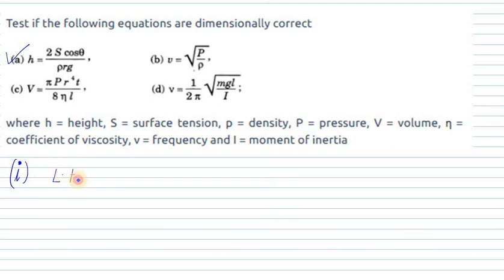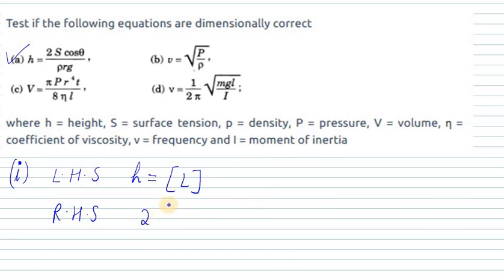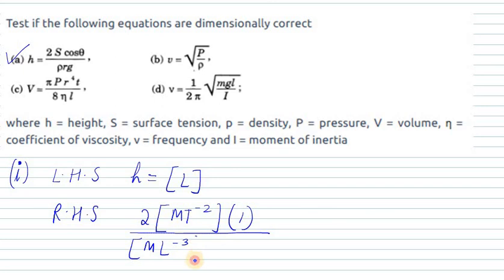On the left-hand side we have h, so the dimensional formula is L only. Now for the right-hand side, we have 2S cosθ. S is surface tension, written as MT⁻². Cosθ is a constant, so 1. Then ρ, density, is ML⁻³. R is a length, and G is LT⁻².